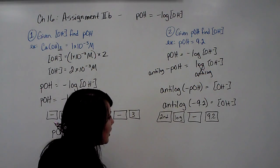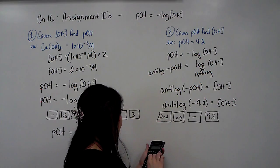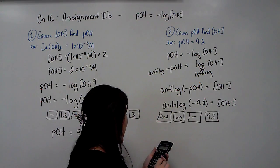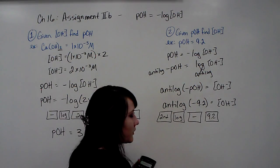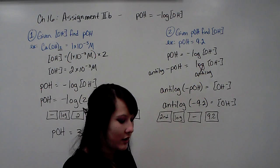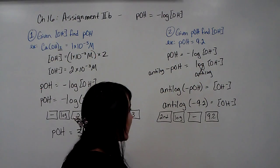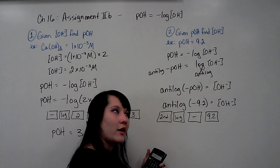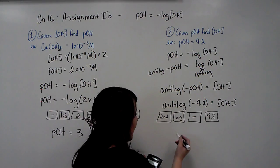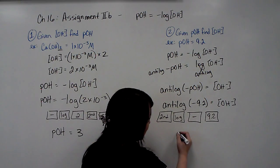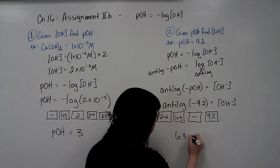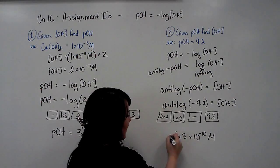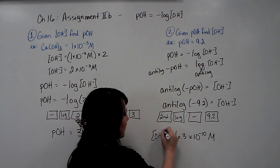Okay, so once you plug it into your calculator, let's go ahead and do that now. 2nd log negative 9.2. And you're going to end up with, hopefully, a number in scientific notation. If not, go ahead and change it to scientific notation. Notice we have two numbers that we use for our POH, so we want to round off to two sig figs in our final answer. So it's going to be 6.3 times 10 to the negative 10 molar, and that's our hydroxide ion concentration.